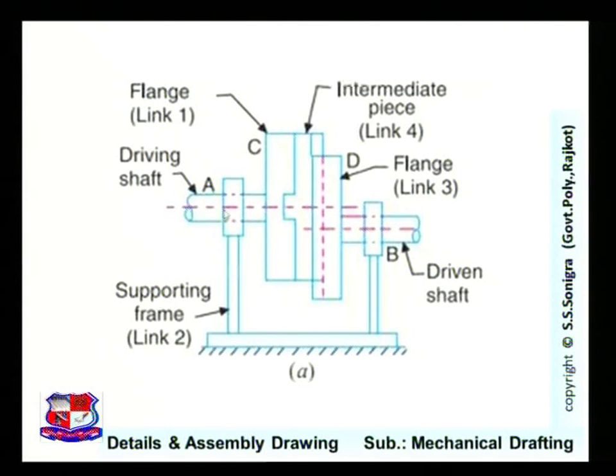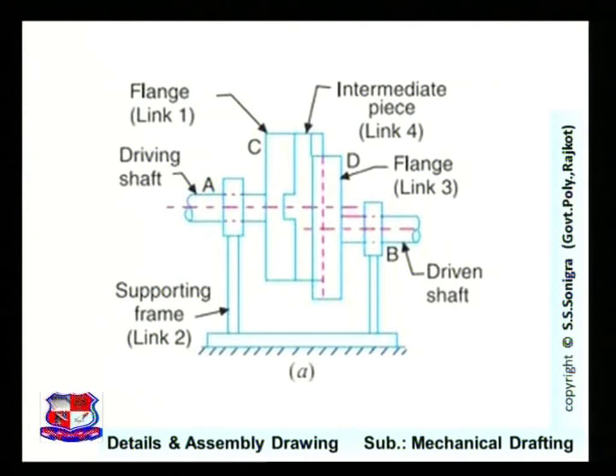As the driving shaft rotates in any direction, say clockwise, the intermediate piece rotates accordingly, and the flange shown here will also rotate in the same direction. You can see that the axes of both the driving shaft and driven shaft are offset from each other — there is an eccentric distance, and both shafts are not collinear. The intermediate sliding disc allows this misalignment of the axes.